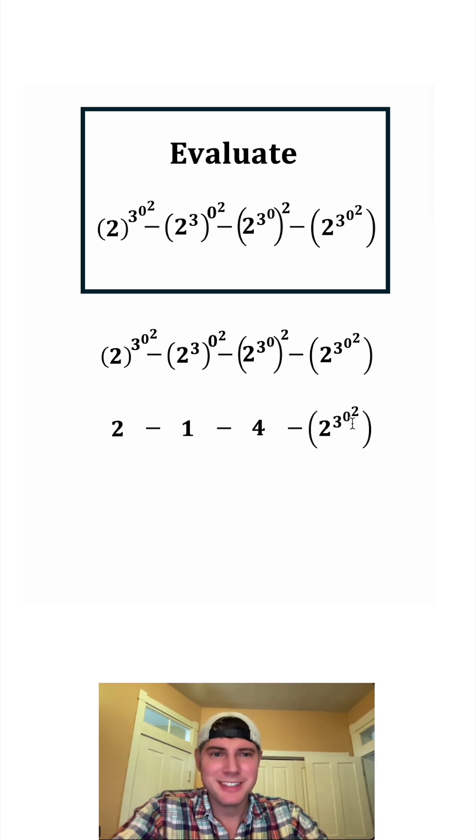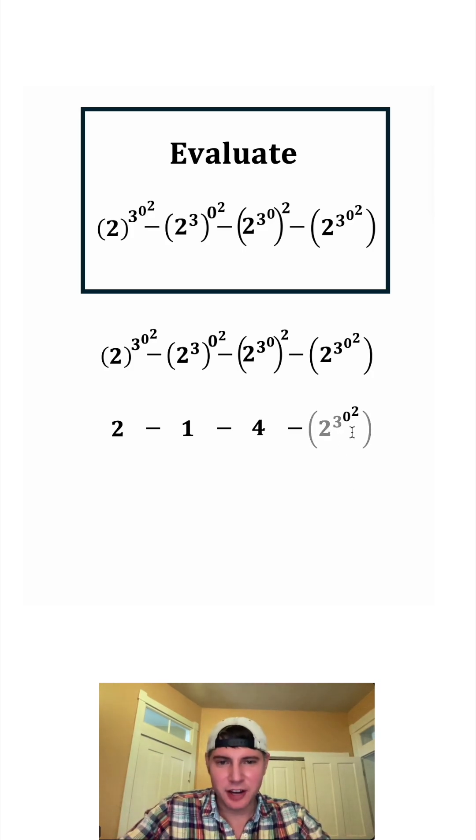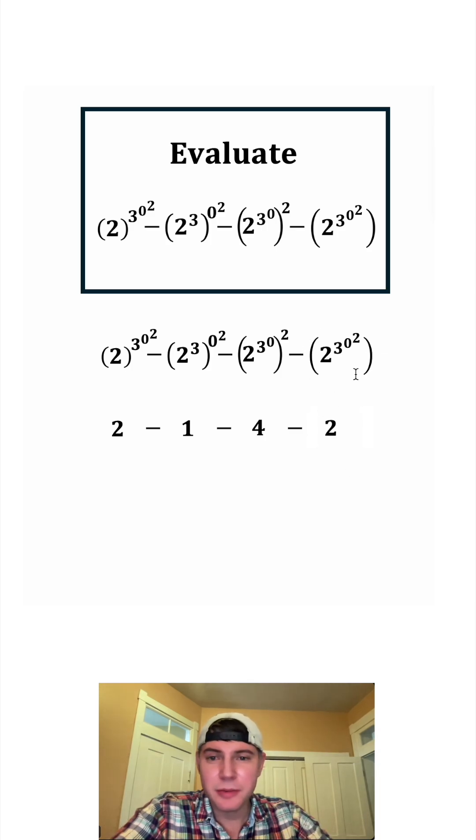And now let's do the last term. Since everything is inside the parentheses, we're just going to do the whole thing. And we'll start at the top of the tower. Zero to the two is equal to zero. And then we're going to do three to the zero. Anything to the zero power is equal to one. And then we have two to the one, which is equal to two. So the last term ended up being the exact same thing as the first term. But the parentheses affected the other ones.